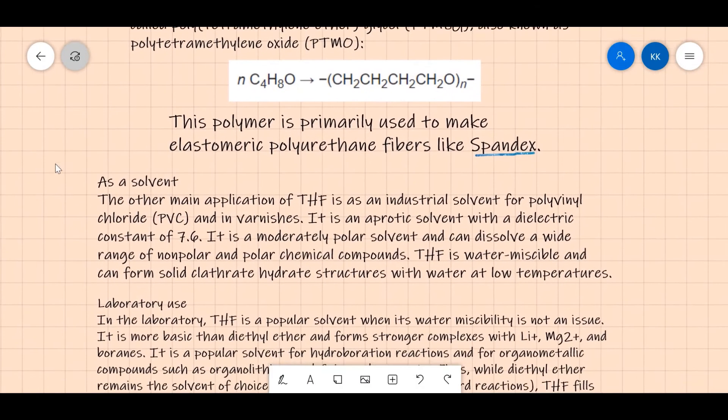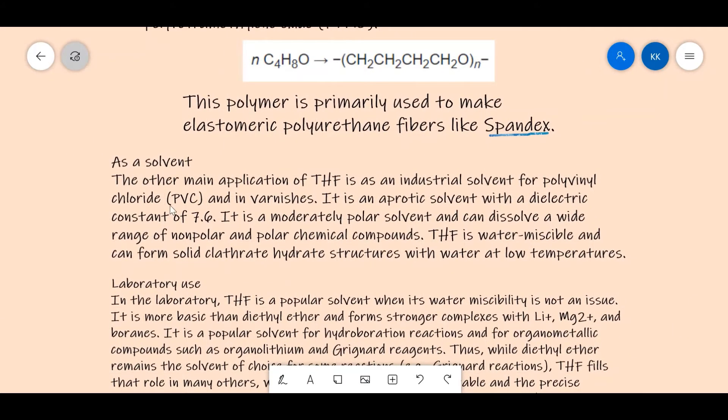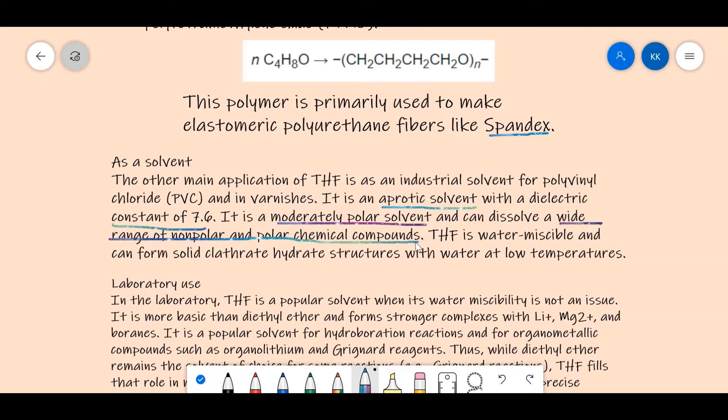Now let's look at other uses. It is used as a solvent. The main application of THF is as an industrial solvent for PVC and in varnishes. It is used as an aprotic solvent with a dielectric constant of 7.6. It is a moderately polar solvent and can dissolve a wide range of non-polar and polar chemical compounds. Hence it is a very versatile solvent.